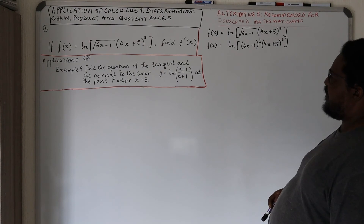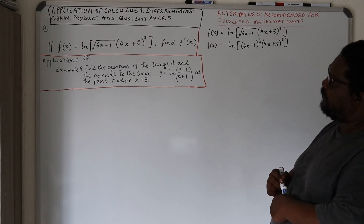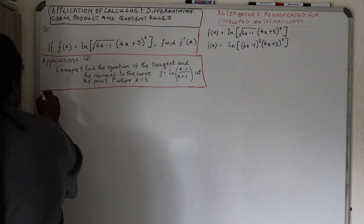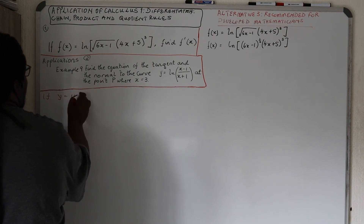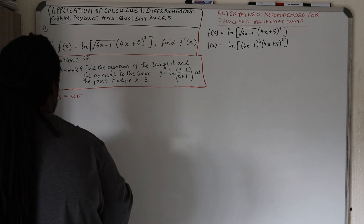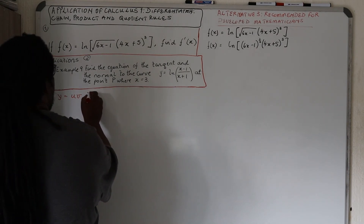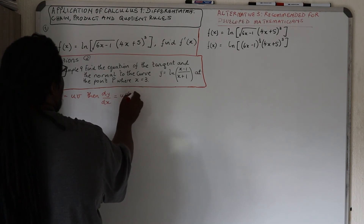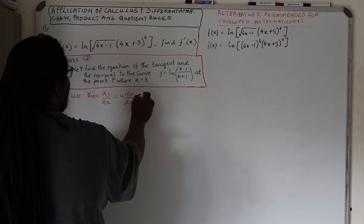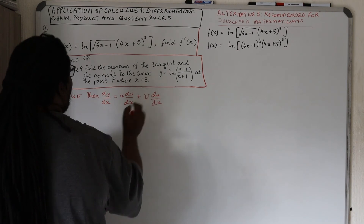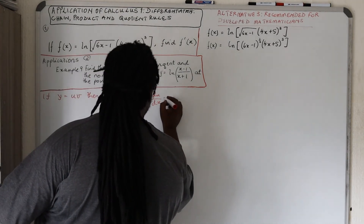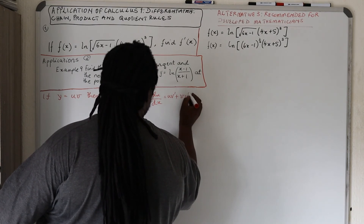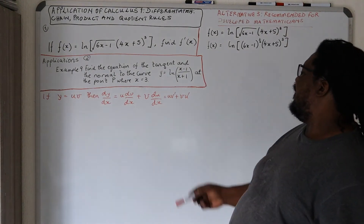The product rule states that if y equals u·v, where u and v are both functions of x, then dy/dx equals u·(dv/dx) plus v·(du/dx). This can also be written as u·v' plus v·u'. That is the product rule, and I am going to apply it here.